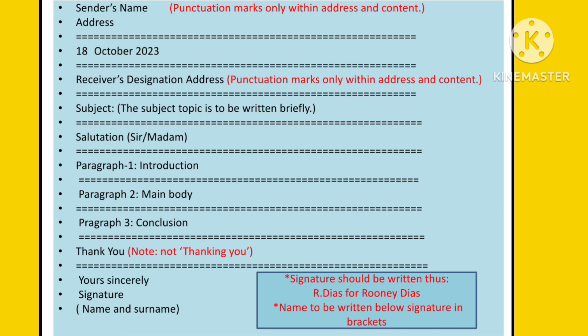Leave a line and then write the salutation — that would be 'Sir' or 'Madam'. Leave a line and write paragraph 1, which will be your introduction. Leave another line and write paragraph 2, which will be your main body. Leave a line and write paragraph 3, which will be your conclusion. Leave a line and write 'Thank You' with capital letters for T and Y. Leave a line and write 'yours sincerely' with a small 's'. Below that, your signature in the format that is given, and below that your full name in brackets.